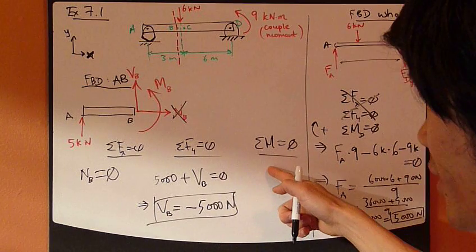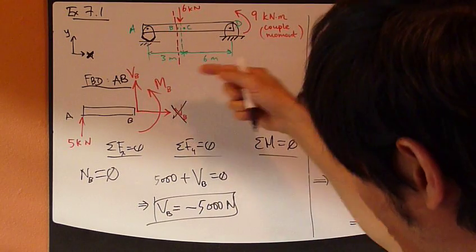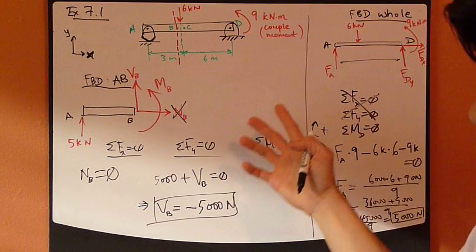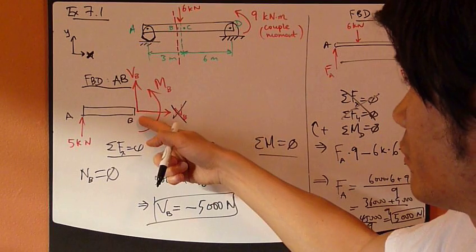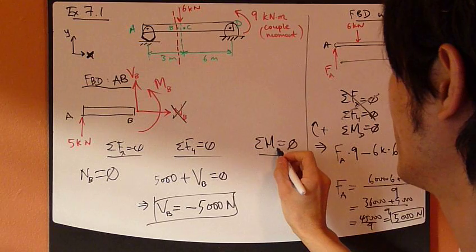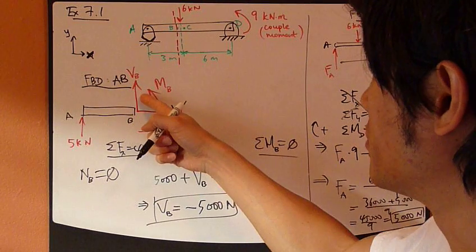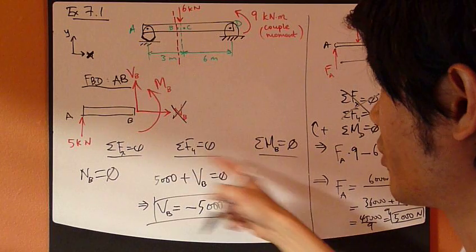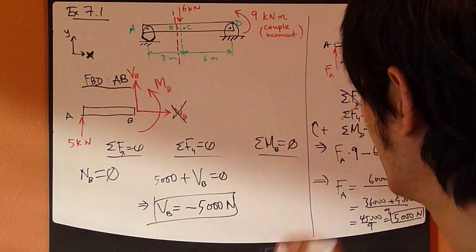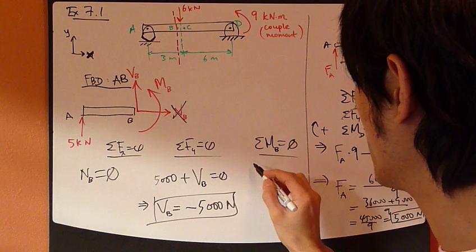Sum moment about what point? You can choose any point, but a convenient point is maybe point B. In doing that, then this Vb will disappear in this equation, so you only have to consider this 1,000 newton and mb.